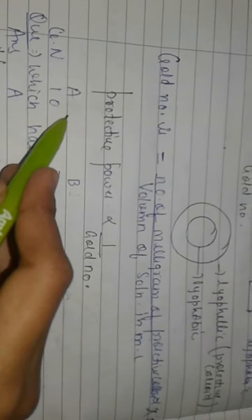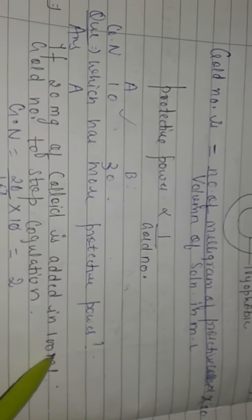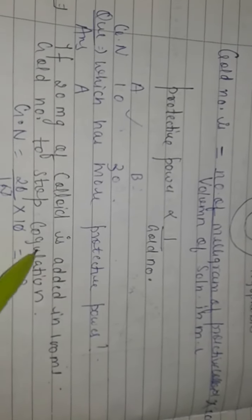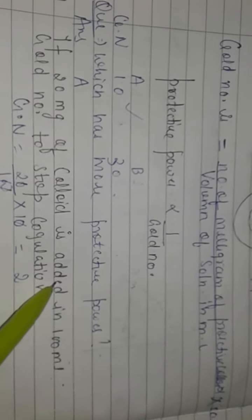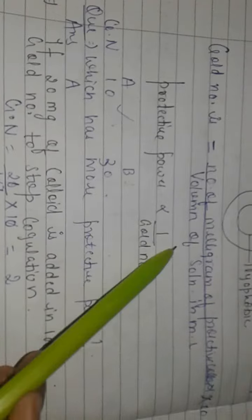For example, if 20 mg of colloid is added in 100 ml gold solution to stop coagulation, gold number is equal to 20 upon 100 into 10. The formula is equal to 20 upon 100 into 10, which equals 2.